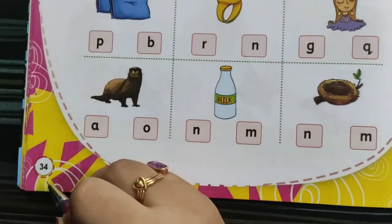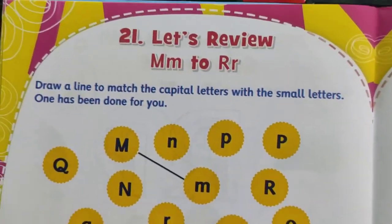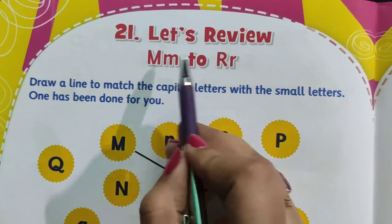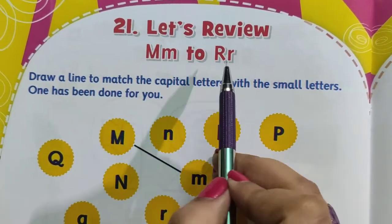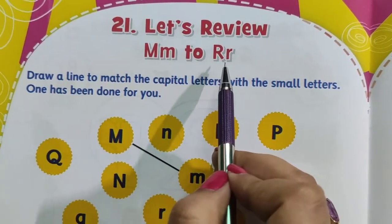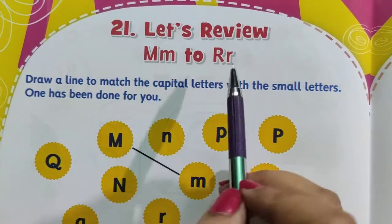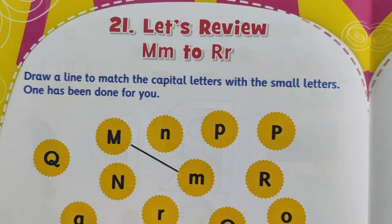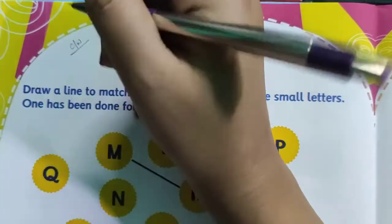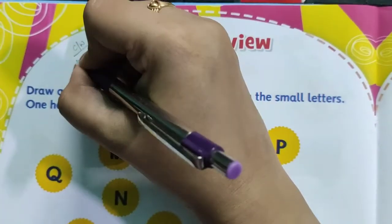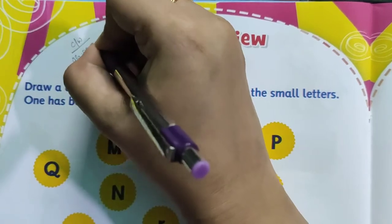Page number 34. Here is the review lesson that is M2R, chapter number 21. Let's review M2R. This is also your classwork for today. Write here CW and today's date 06-09-2021.